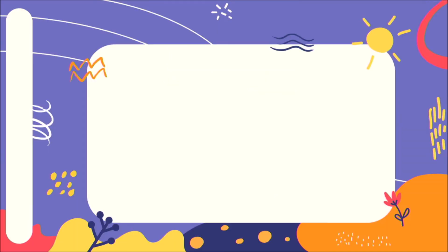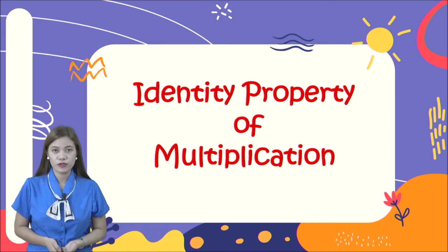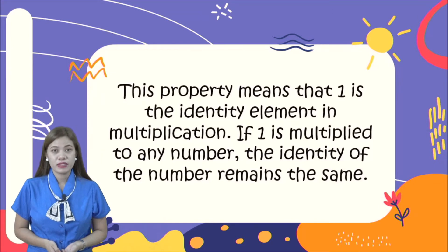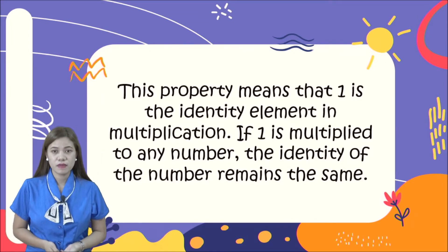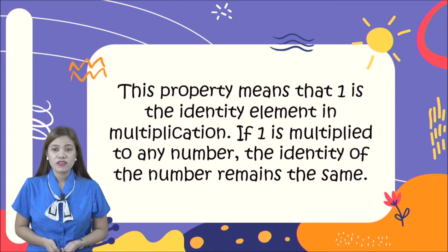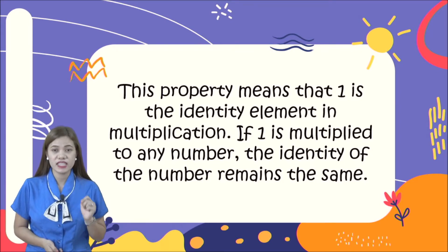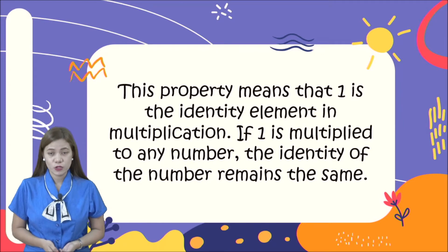The next one is identity property of multiplication. This property means that one is the identity element in multiplication. If one is multiplied to any number, the identity of the number remains the same. Let us look at the examples.